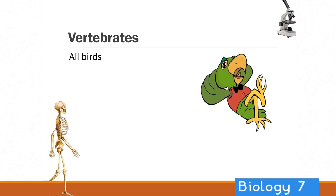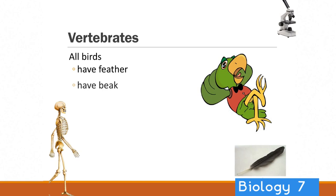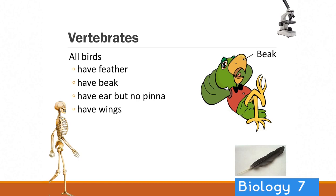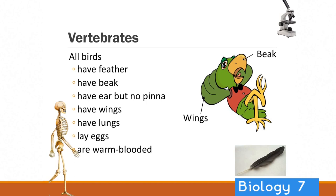Now let's talk about birds. What do birds all have in common? Feathers — that's an easy one. They also have a beak. They do have ears but no pinna, and they have wings — that's a big one. They're flying around with this special adaptation of wings. Birds also have lungs, but they're a little different from mammal lungs; they've got a very efficient several-chambered system of getting oxygen into their bodies, because they need quite a lot of energy for all that flapping. Birds lay eggs and they are also warm-blooded. Examples include ostrich and penguin.